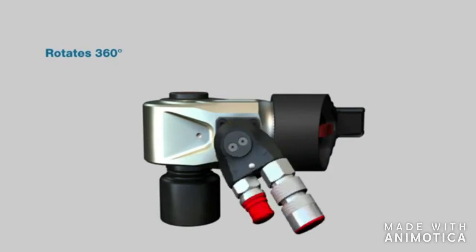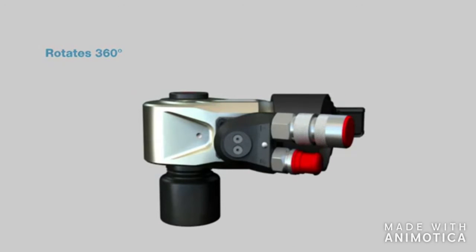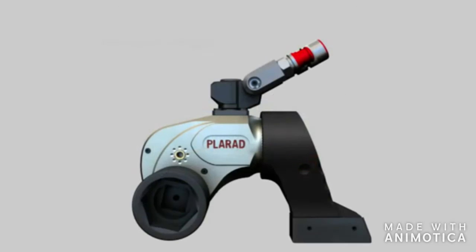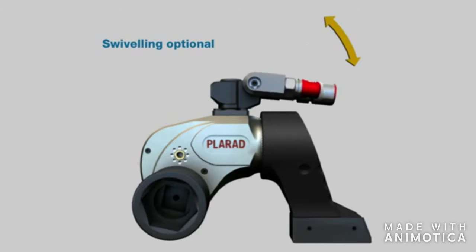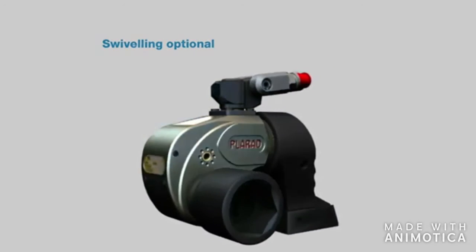The hydraulic connection rotates 360 degrees. Another option is a two-axis hose connection that rotates and swivels.